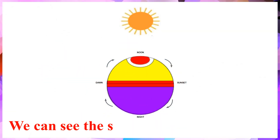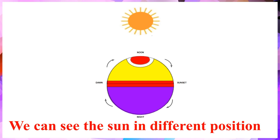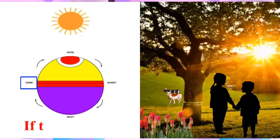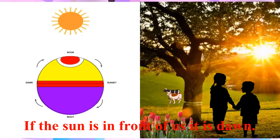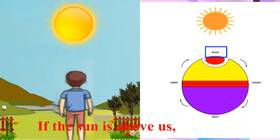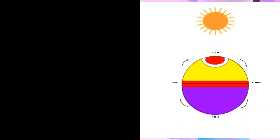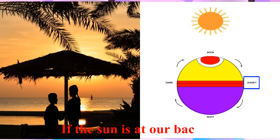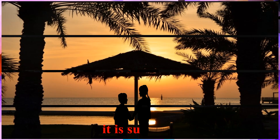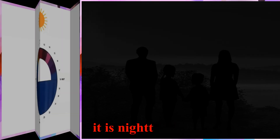We can see the sun in different positions. If the sun is in front of us, it is dawn. If the sun is above us, it is noon. If the sun is at our back, it is sunset. And if we cannot see the sun, it is night time.